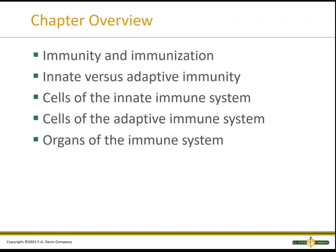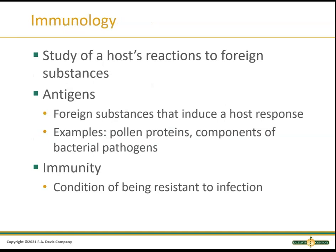Chapter one deals with immunity and immunizations — what those terms mean, the difference between innate and adaptive immunity, the cells of each system, and the organs that are part of the immune system. In immunology, we study the host — us humans — and our reaction to anything that's foreign. The term we use for a foreign substance is antigen. Antigens are foreign things that get into a person and induce an immune response. The correct term is immunogen, but you'll always hear antigen.